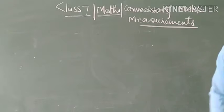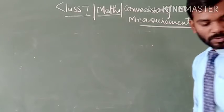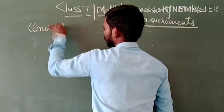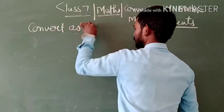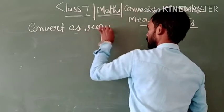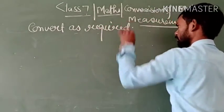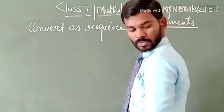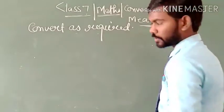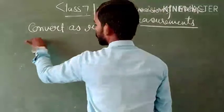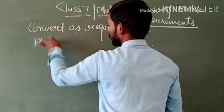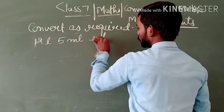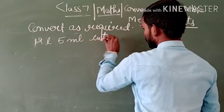Our first question is: Convert as required. The first question is — 12 litre 5 millilitre — convert into millilitre.